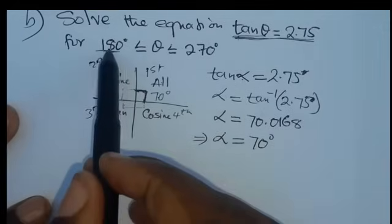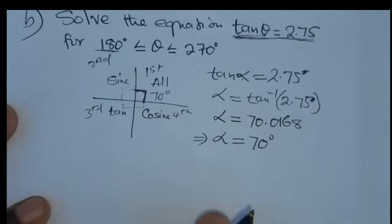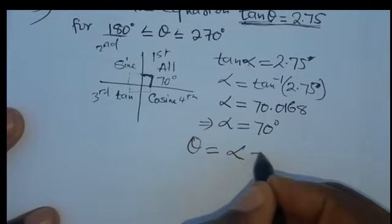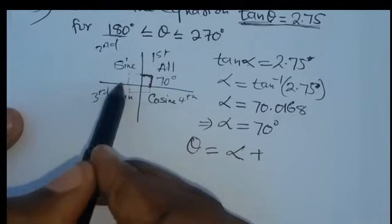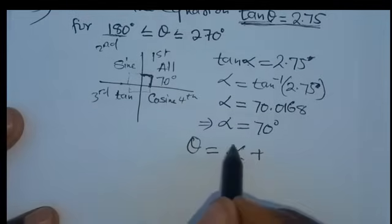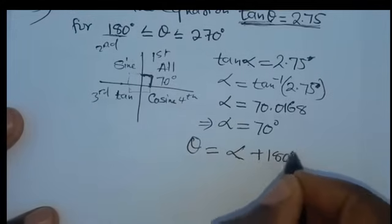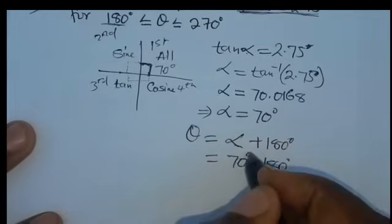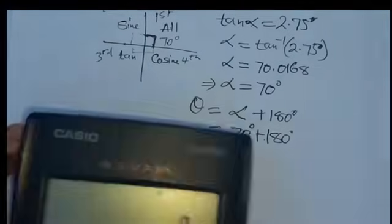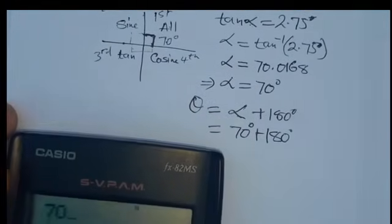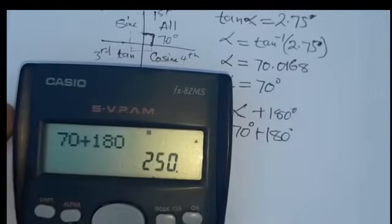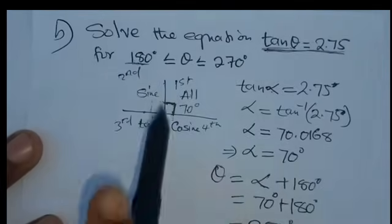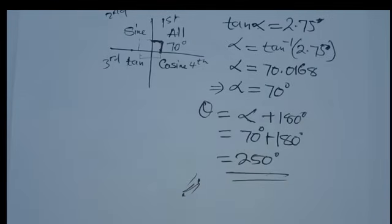To find θ in the range 180° to 270° — which is the third quadrant where tan is positive — we add 180° to the basic angle: θ = 70° + 180° = 250°. This is the only solution satisfying the condition. Therefore θ = 250 degrees.